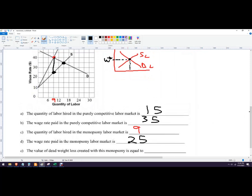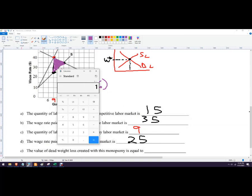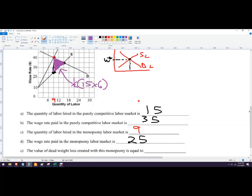The value of the deadweight loss created. So it's the total value of the difference between the competitive outcome, which is right here, and the monopsony outcome. So it's this purple triangle here that I'm coloring in. And I'm just going to say one half the difference between here to here. So that's going to go from 40 down to 25, which is 15, times the loss of the number of workers, which is the change between 9 and 15 there, which would be 6. 6 times 15. Just do this one 6 times. 15 is 90. And then half of that is 45. So we have a deadweight loss of 45. This is measured in money. And that's the answer. That's an AP unit 5 practice question with the monopsony markets.